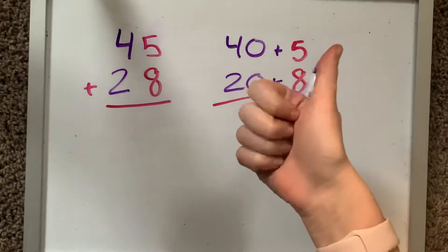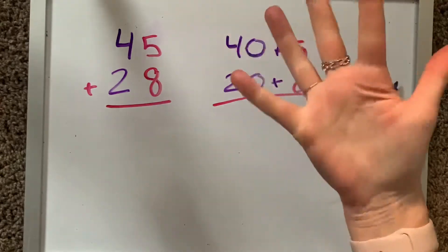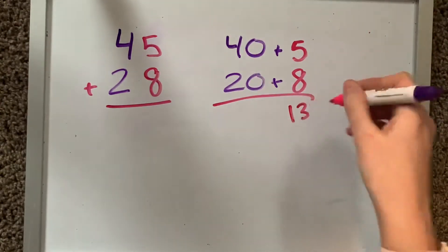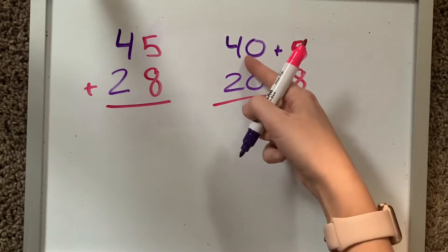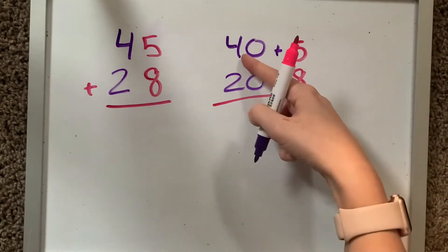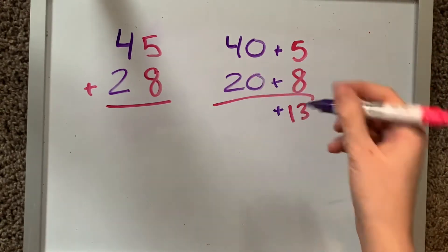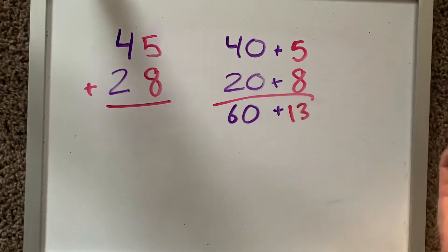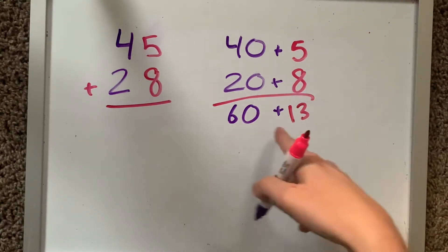8, 9, 10, 11, 12, 13. And then now I need to figure out what 40 plus 20 is. Well, 40, 50, 60. Oh, now I just need to add 60 plus 13. That's pretty similar to our last one where we were thinking about, I think we were at 60 and then we added some more to it. Plus 13.